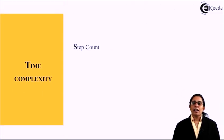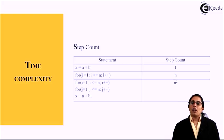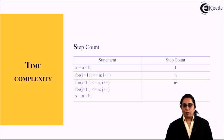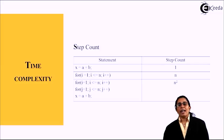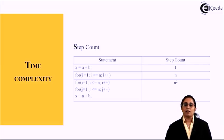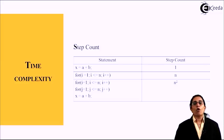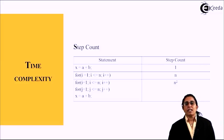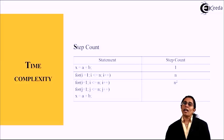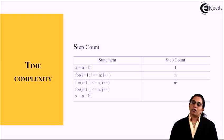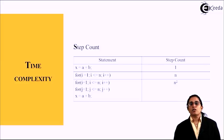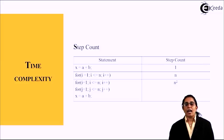The second one is the step count. For example, x = a + b takes a step count of one. When we take a for loop, for i = 1 to n, the step count is n. For i = 1 to n and for j = 1 to n, the step count is n².